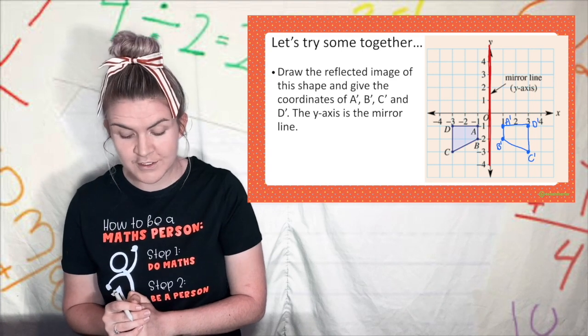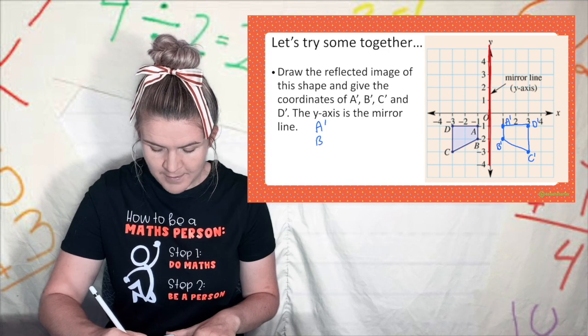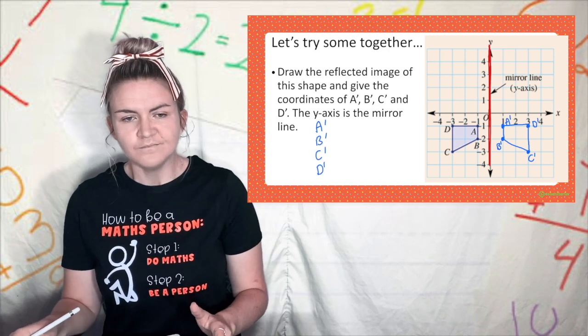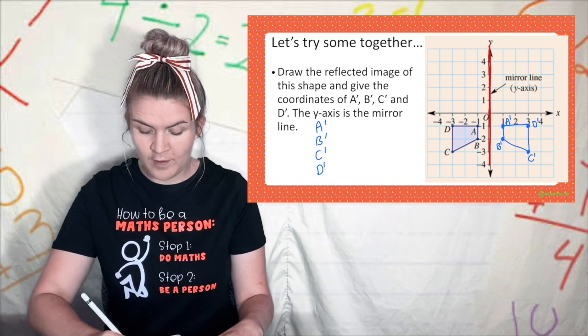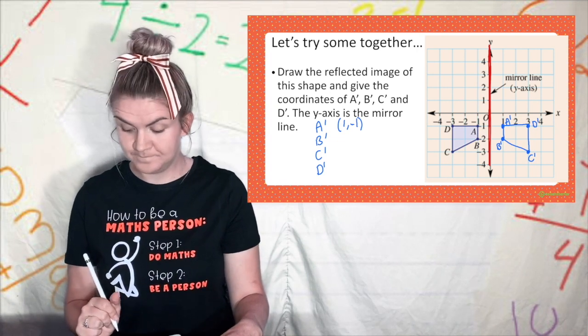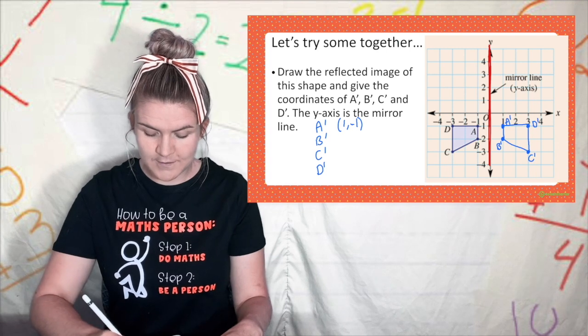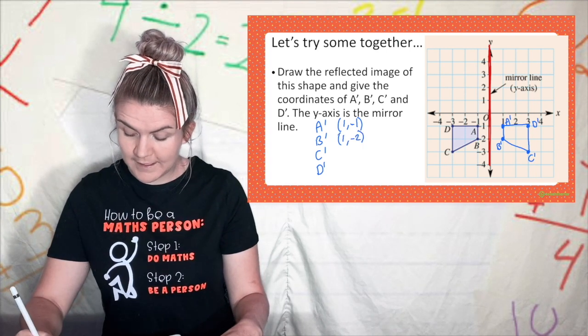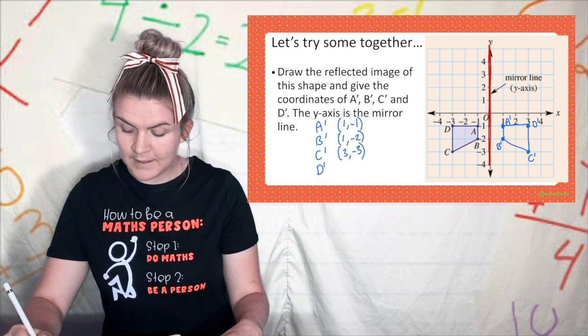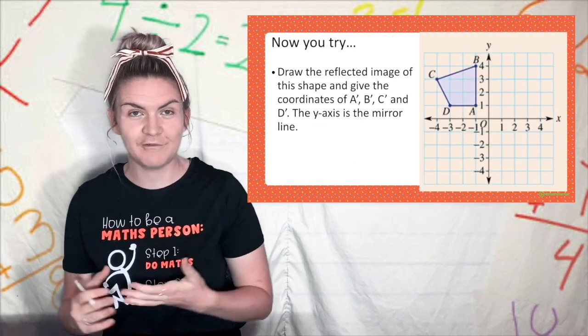The second half of the question says that I must give the coordinates of all these primes so I'm going to say a prime, b prime, c prime and d prime. A prime is one and negative one, remembering that it must be round brackets because this is not a translation. B is in line with one and negative two so that's one, negative two. C prime is three and negative three and d prime is three and negative one.